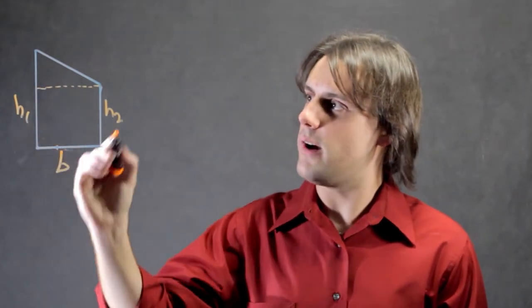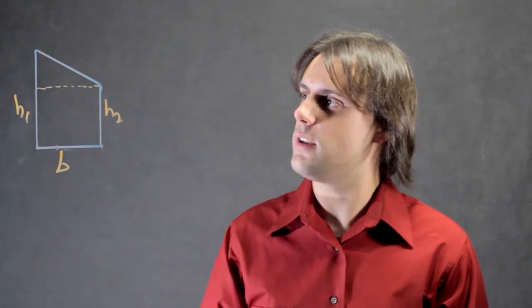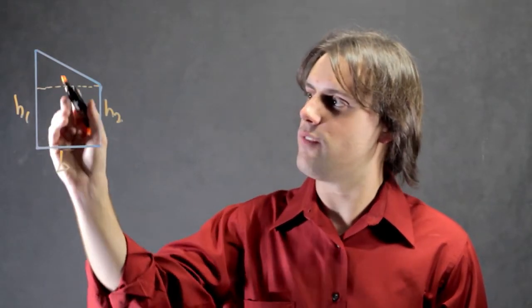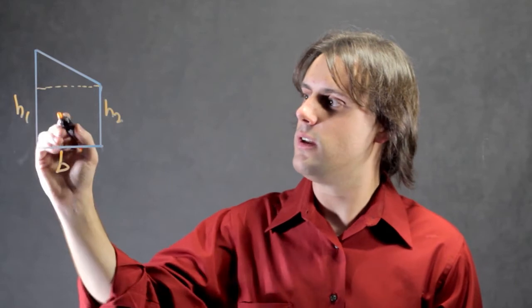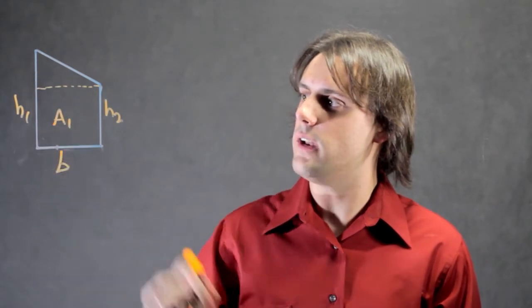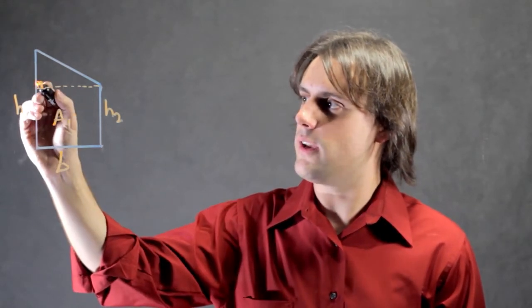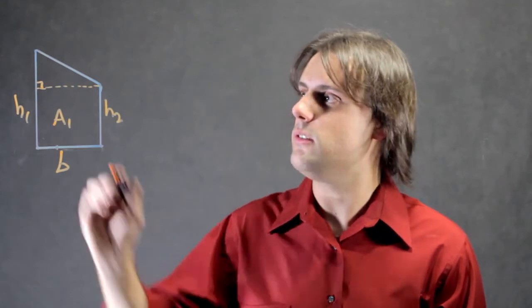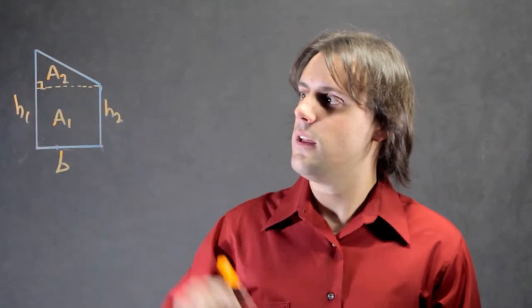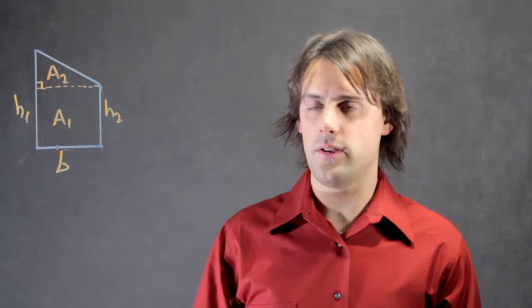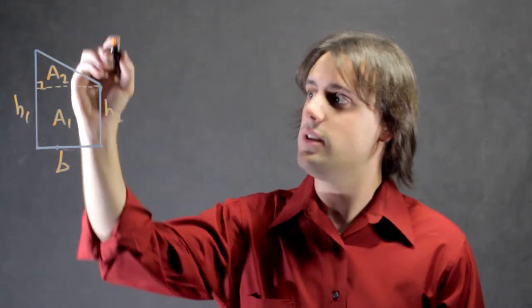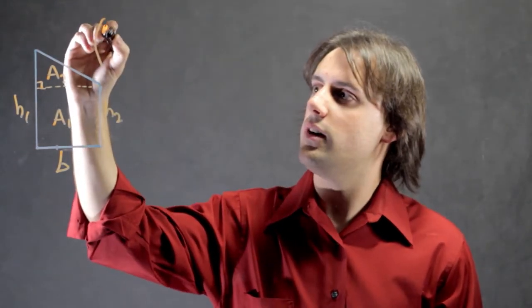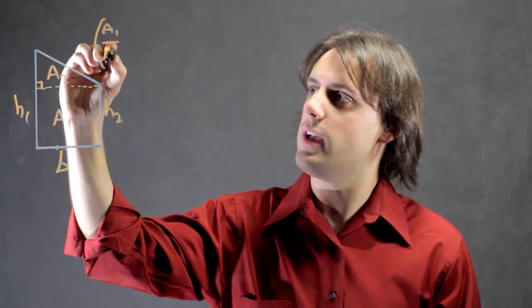So now my original geometric figure is actually two different figures. I have a rectangle with an area A1 and a right triangle right on top of the rectangle with an area A2. So I have two areas here and I can ask the question, what is the ratio of A1 over A2?